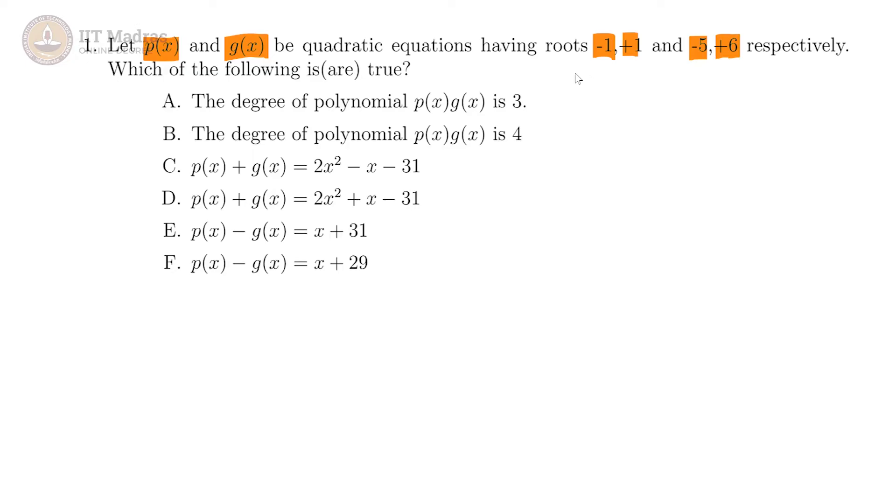Then the degree of the polynomial p(x) into g(x) is 3 - it is not, because you have two quadratic equations and you are multiplying them. So the x square terms will have to necessarily multiply.